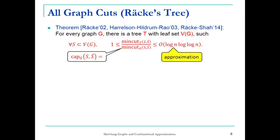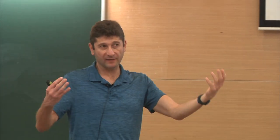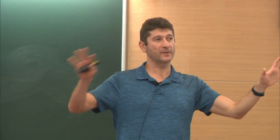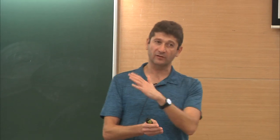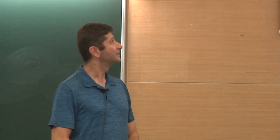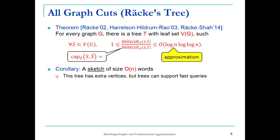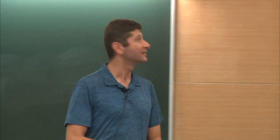In G, when you try to compute the minimum cut between S and S-bar, it's just the capacity of the cut. But in T, because you have extra vertices, you have to optimize — you want to separate set S from S-bar, think of S as a super source and S-bar as a super sink, and you have to decide which side to put the other vertices on. It's an optimization problem, but not very difficult because it's a tree with only 2n vertices. The size is only order n, linear in number of vertices — this gives you some sketch of size order n.